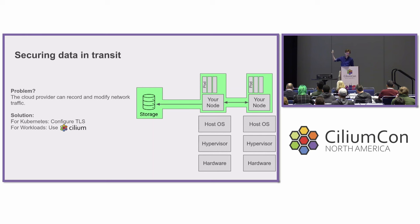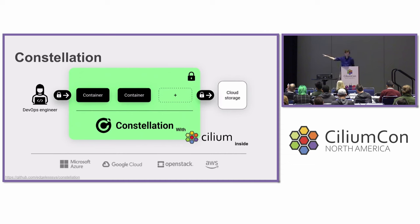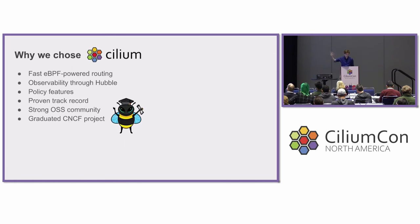For the Kubernetes components like kubelets, you have your TLS configuration, which you should have done. For the workloads themselves, we use Cilium. What's interesting is we need to run on all cloud providers and even OpenStack — everything our customers want to run Kubernetes on. We leverage Cilium being cloud-agnostic. Why we chose Cilium: it's fast, observability is great, it has great policy features, a proven track record, a strong open source community, and it recently graduated as a CNCF project.